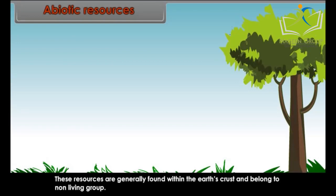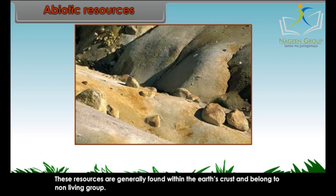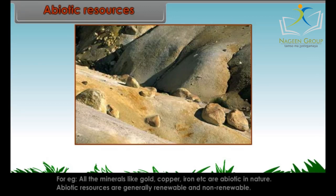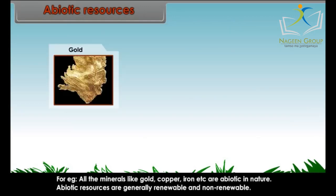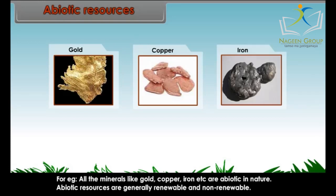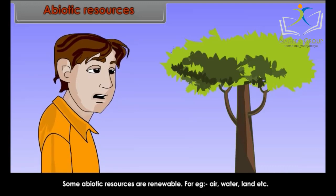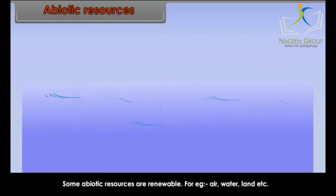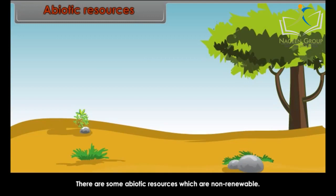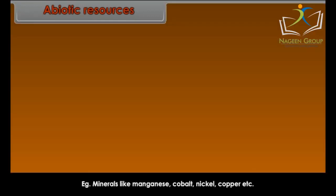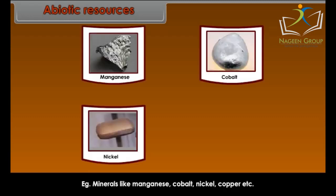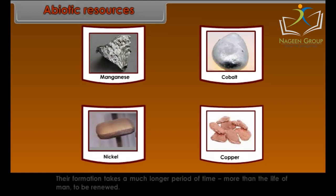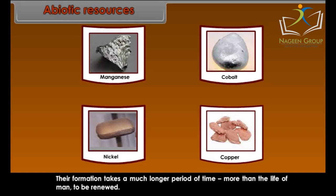Abiotic resources are generally found within the earth's crust and belong to the non-living group. For example, all minerals like gold, copper, iron, etc. are abiotic in nature. Some abiotic resources are renewable, for example, air, water, land, etc. There are some abiotic resources which are non-renewable, for example, minerals like manganese, cobalt, nickel, copper, etc. Their formation takes a much longer period of time — more than the life of man — to be renewed.